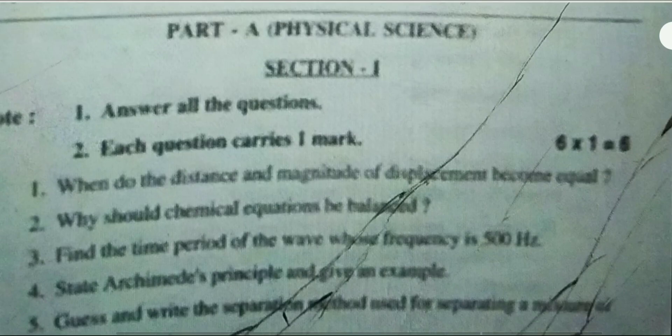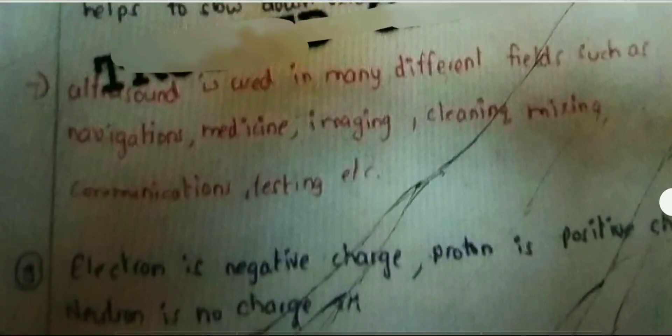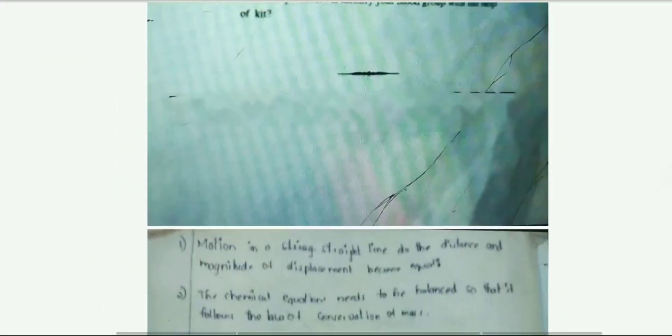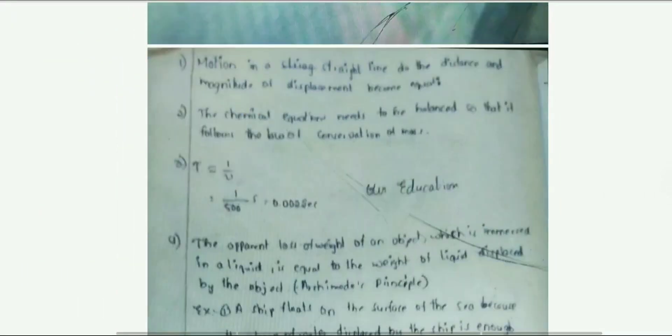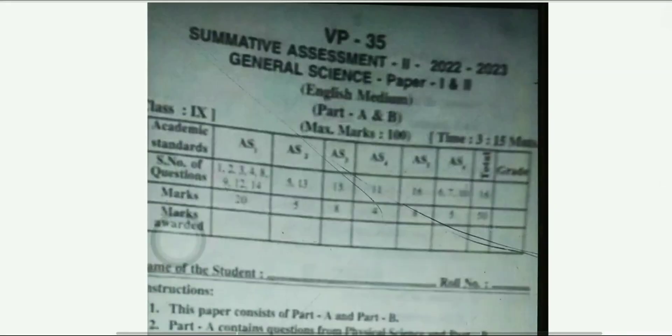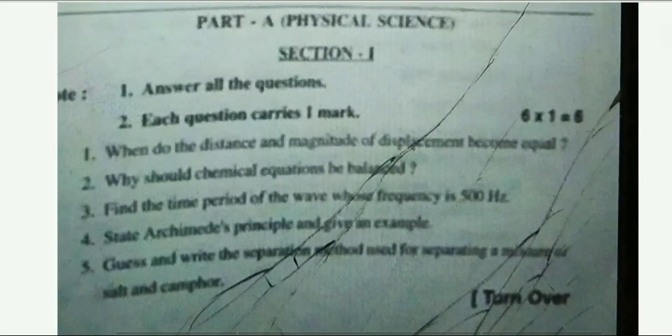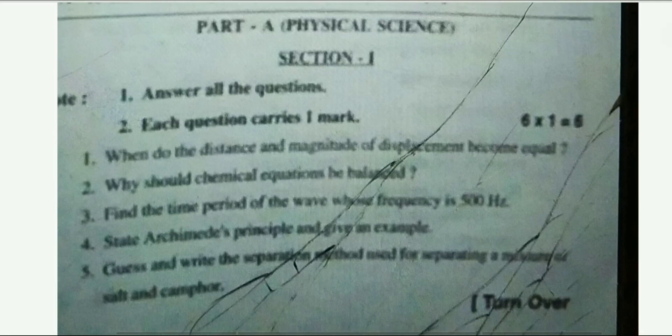You can see this is your question paper and next you can see this is your answer key. This is your section one physical science — part one physical science.